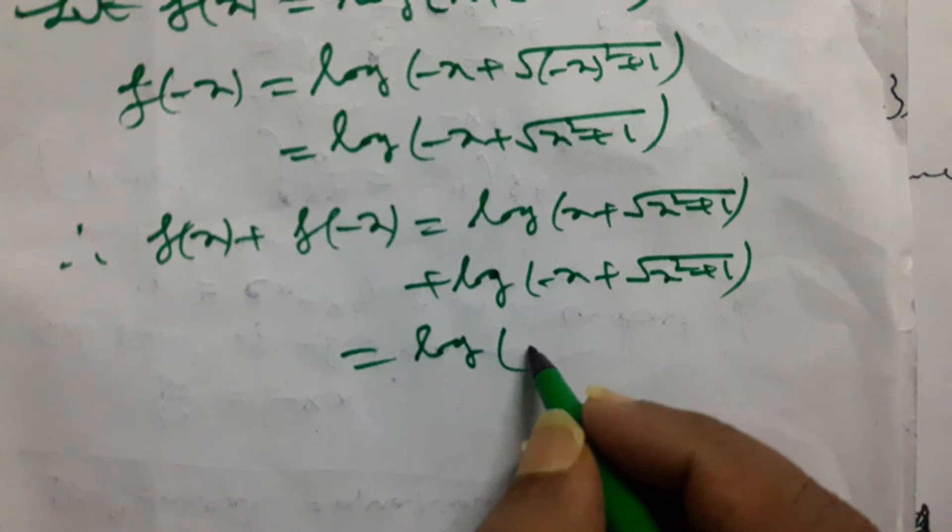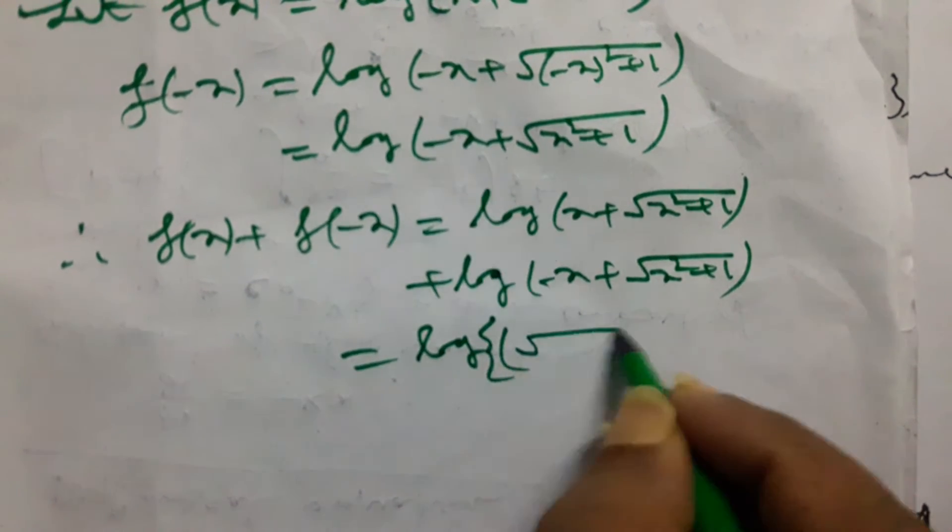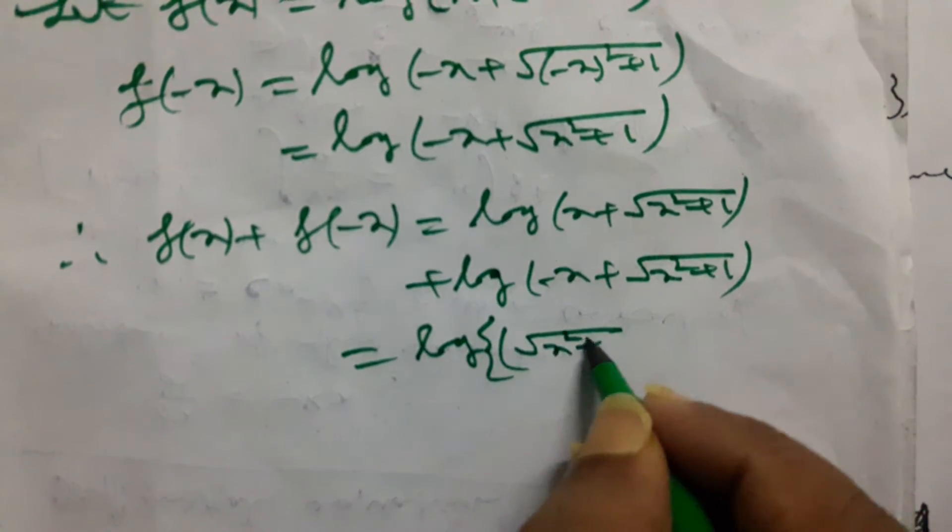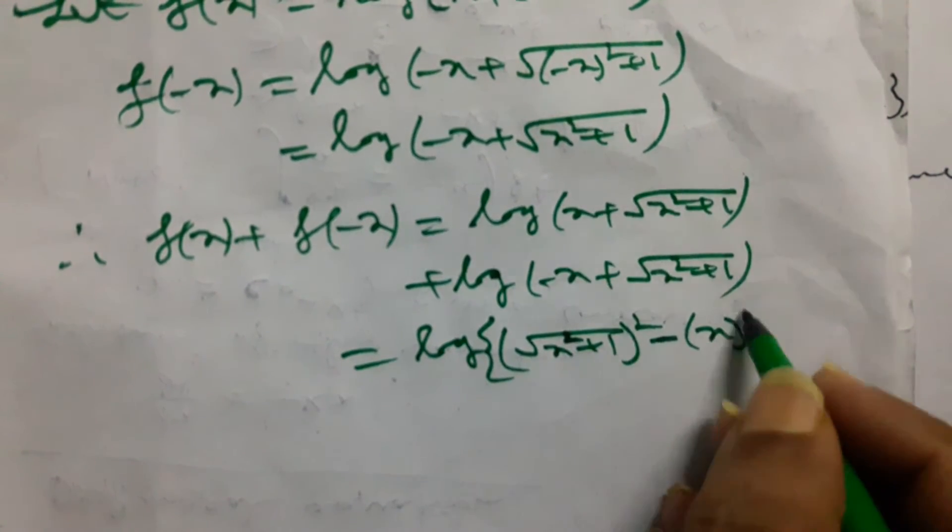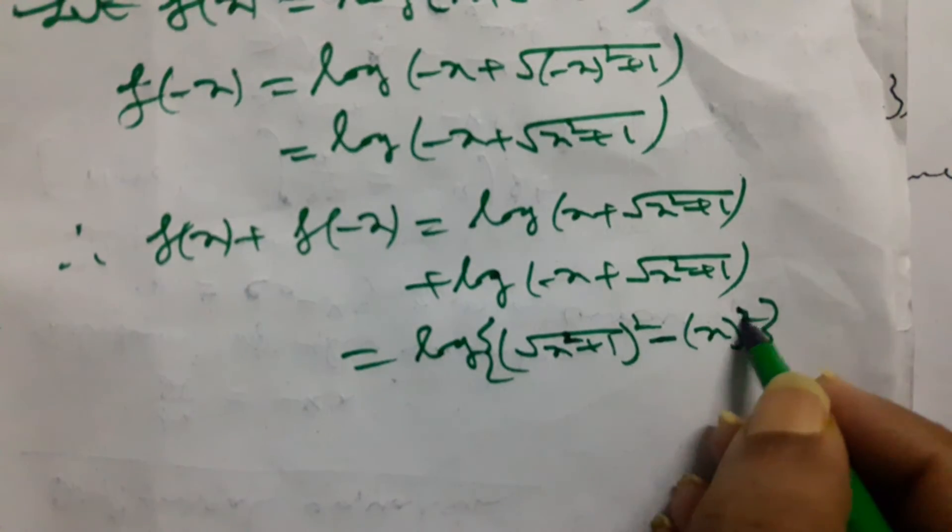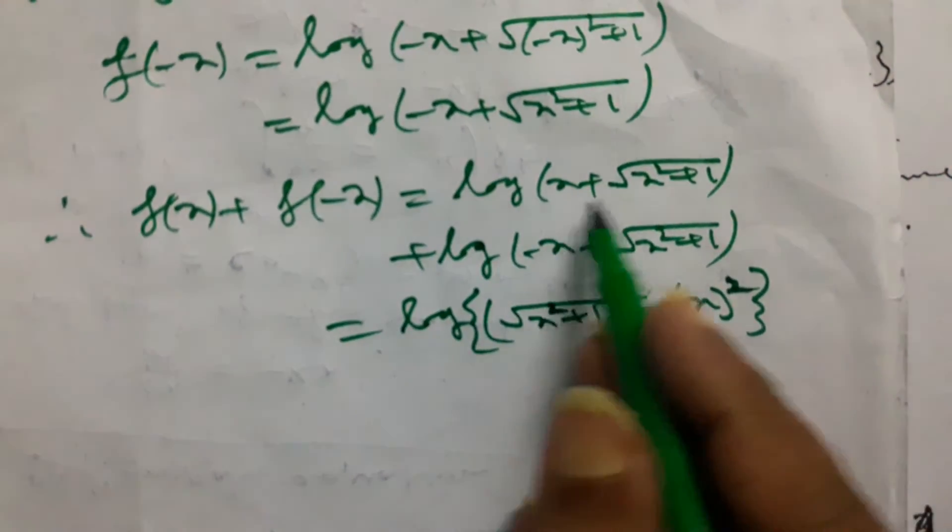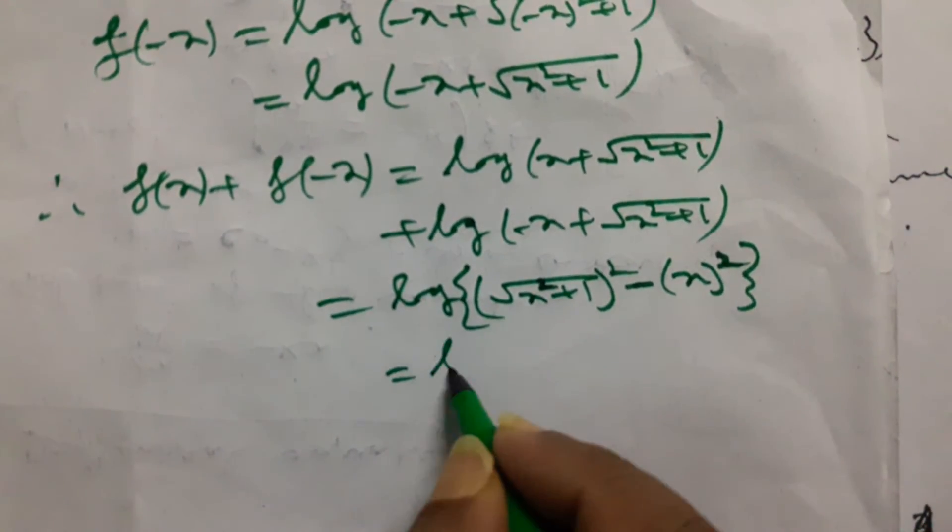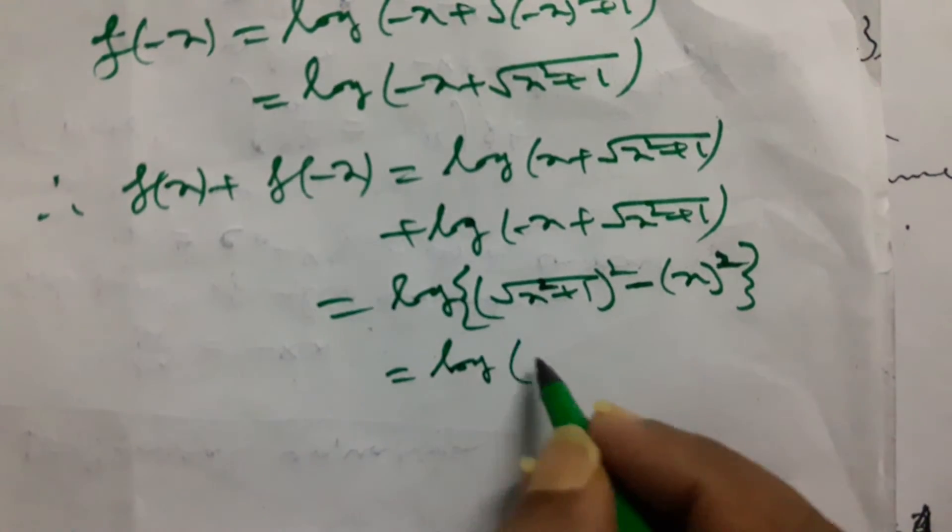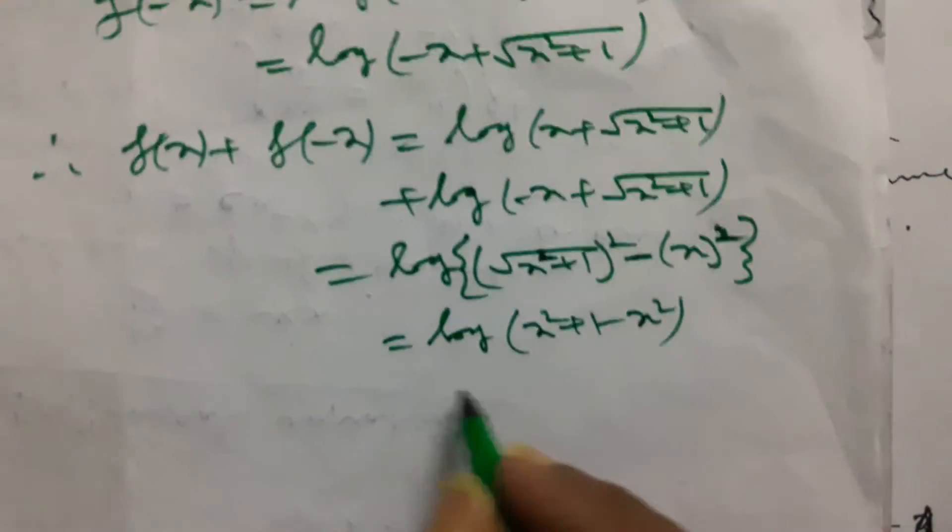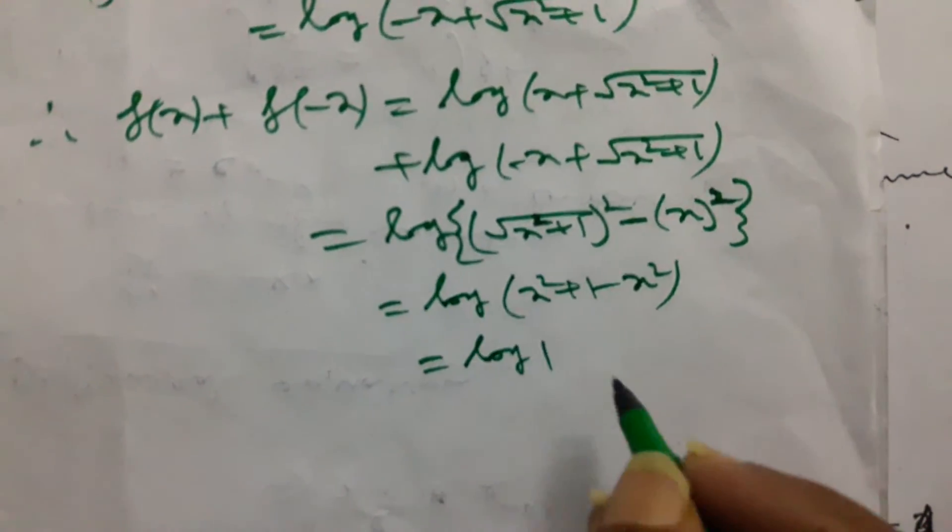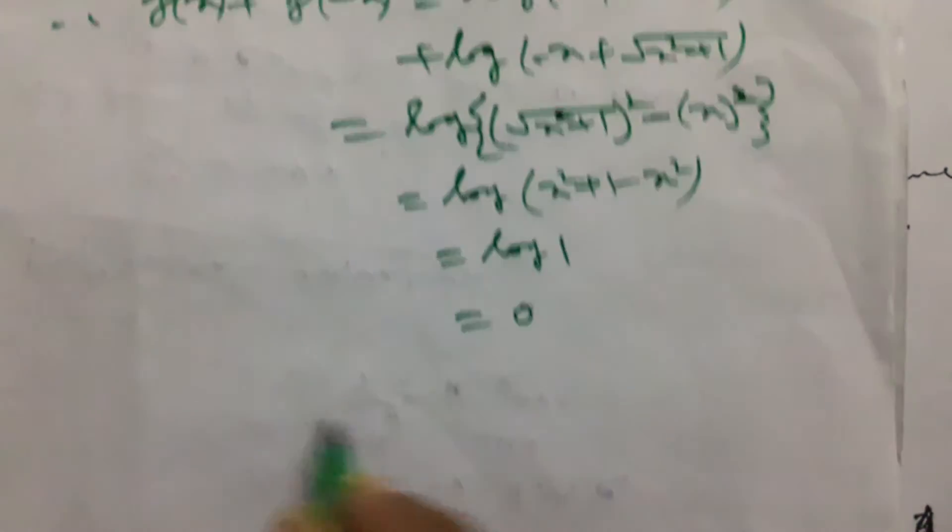That is x square plus 1 whole square minus x square. If we consider this product, a plus b into a minus b, that will be x square plus 1 minus x square. Simply x square will cancel, so I will get log 1. Log 1 means 0.